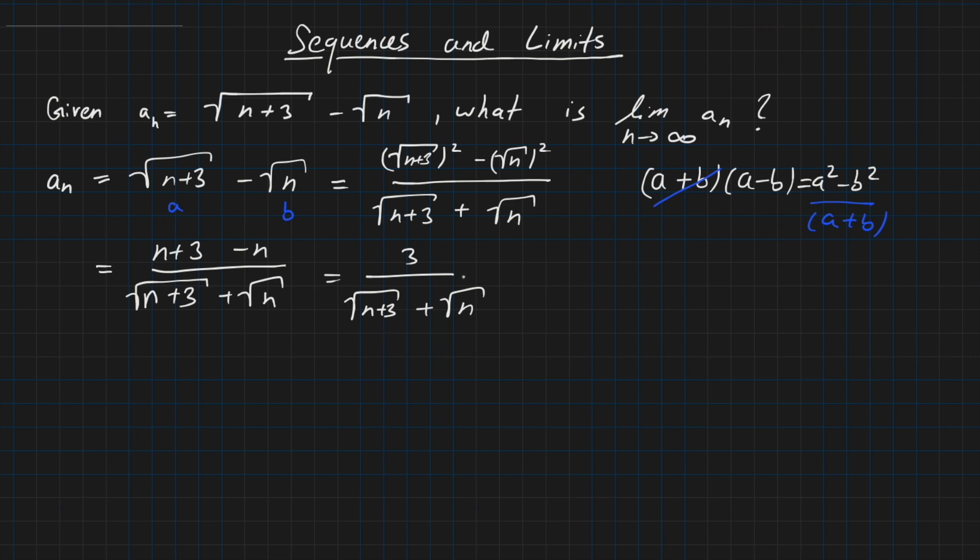So this was just an application of this equation here, and then we cancel out everything we can, so the root with the square, and also here n with minus n, so this is what we get finally. This is exactly the same as a_n, we just reformulated it. So now what can we do?